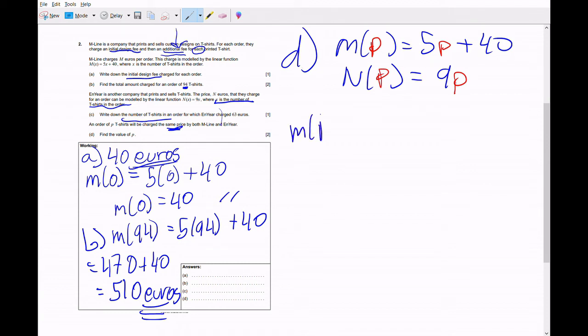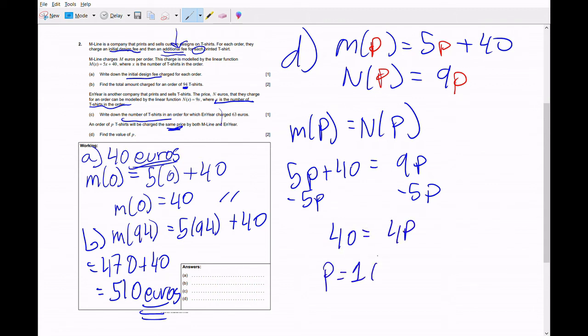To find which order they charge the same price, we have to equal the functions to each other. So it's going to be 5p plus 40 equals 9p. We want to get p alone so we're going to subtract 5p from both sides. We end up with 40 equals 4p, and p is going to equal 10. Remember the units, it's going to be 10 t-shirts.